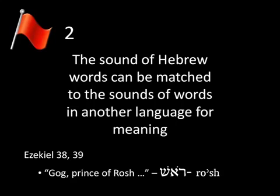Now, this same passage makes reference to Meshek and Tuval. And by the same logic, Meshek sounds a lot like Moscow, and Tuval sounds a lot like Tobolsk. Again, Hebrew and Russian have no relationship to one another. If I had an English word with one set of sounds and a word in Chinese with the same set of sounds, we can't assume that both sets of sounds mean the same thing.